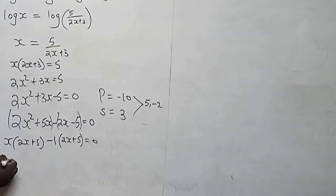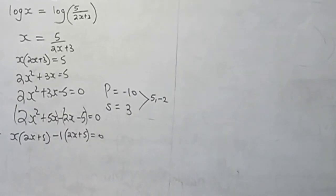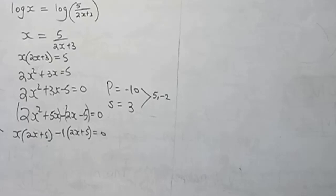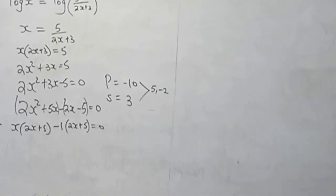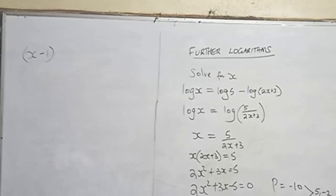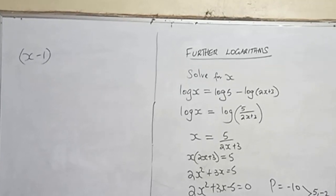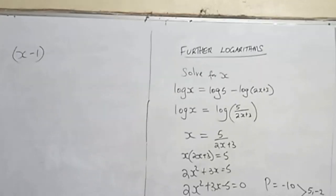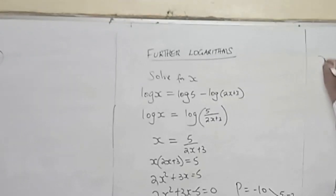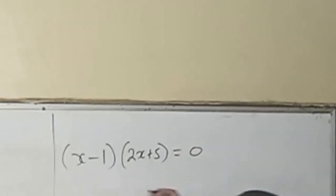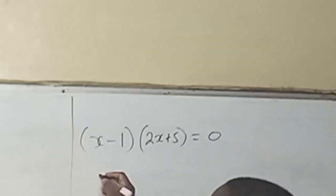And then factorize out x minus 1. Let's bring this to this side. We are going to have x minus 1. The sum of this will be x minus 1 into 2x plus 5 equals 0.